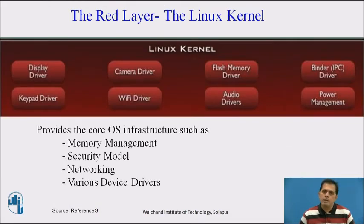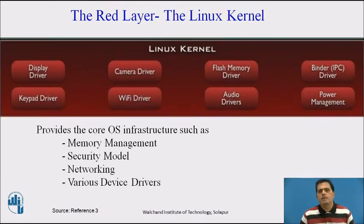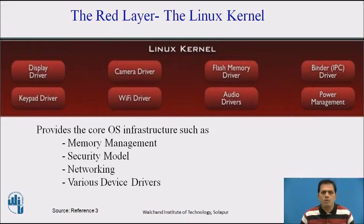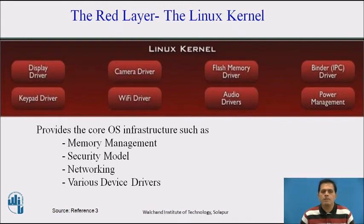Going layer by layer, the first layer is the red layer — the Linux kernel. It provides the core operating system infrastructure such as memory management, security model, networking, and various device drivers. It is a core layer which supports high-level configuration of operating infrastructure including memory management, security model, networking, and various device drivers.